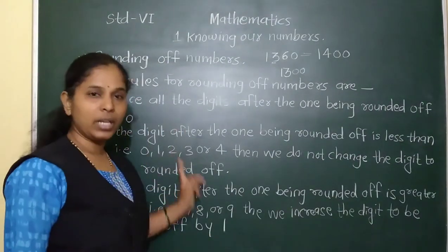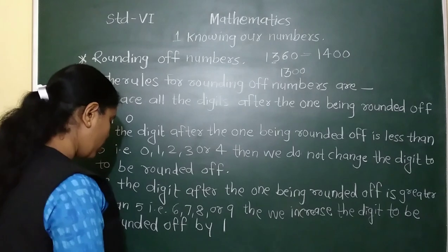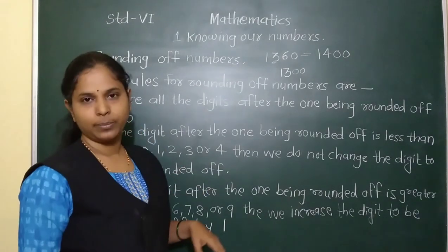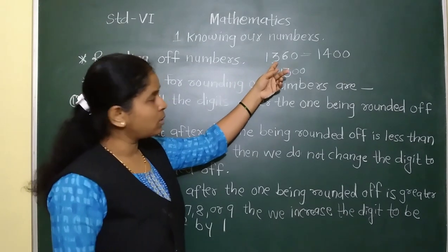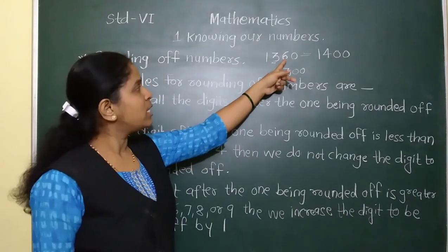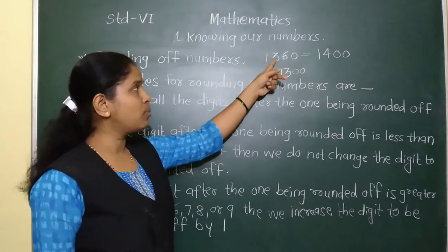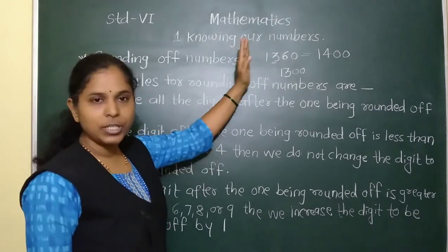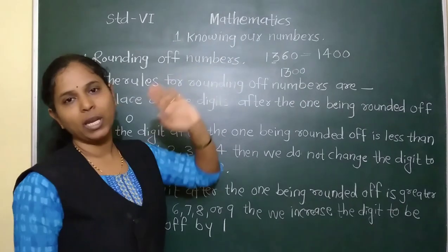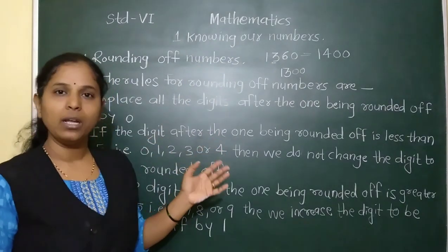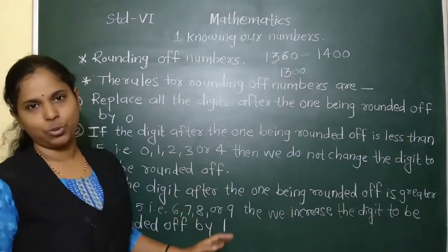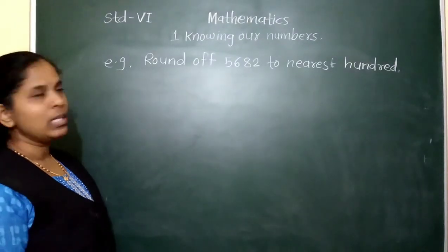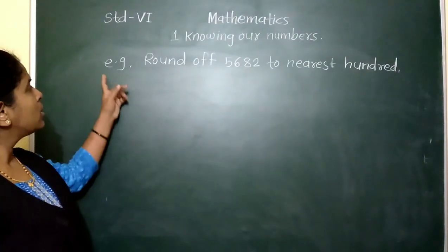The fourth rule is: leave the rest of the digits unchanged. So we increase the rounded digit by 1, and whatever other digits are there — the higher place digits — we keep as they are. This is the last rule for rounding off a number. Now we will solve one example.